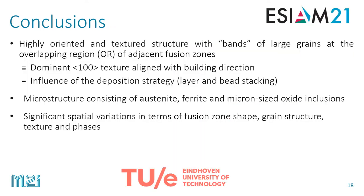To conclude, for this particular processing conditions, we identified highly oriented and textured structures, with large grains in the overlapping regions of adjacent fusion zones exhibiting a dominant ⟨100⟩ texture. There is a significant influence of the deposition strategy and processing conditions, which also gives the opportunity to tailor this microstructure by changing the deposition strategies. The microstructure consists of austenite, ferrite, and micro-sized oxide inclusions, and we see significant spatial variations in microstructural features. With this, I would like to end my presentation — thank you for your attention.